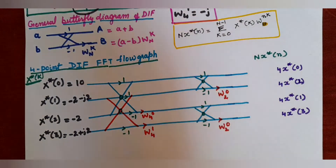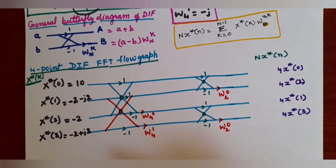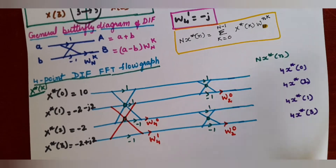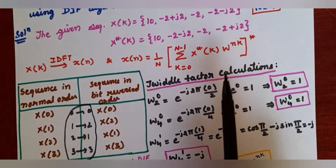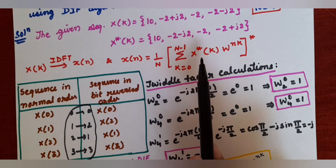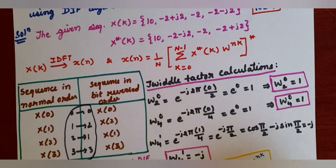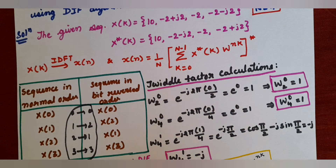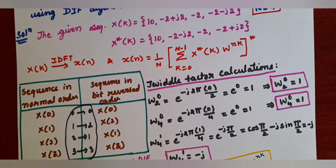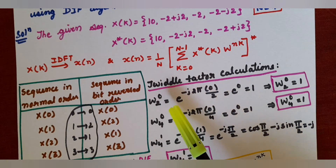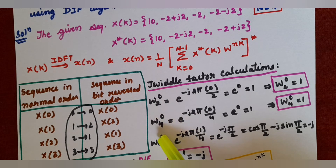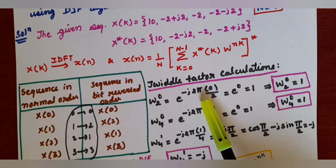Why do you need to draw a 4-point DIF flow graph? To compute the DFT — specifically the DFT of x*(k). The flow graph is not changed whether you compute DFT or IDFT. In DFT the inputs are small x(n); in IDFT the inputs are x*(k). The twiddle factors here are W_2^0, W_4^0, and W_4^1.